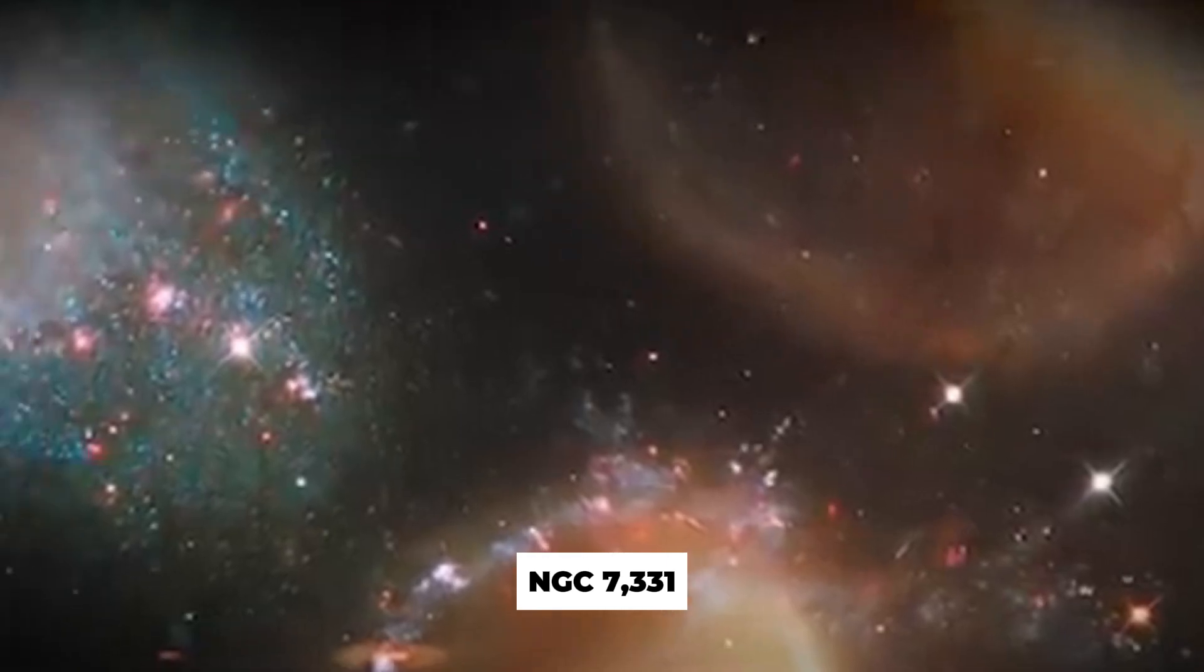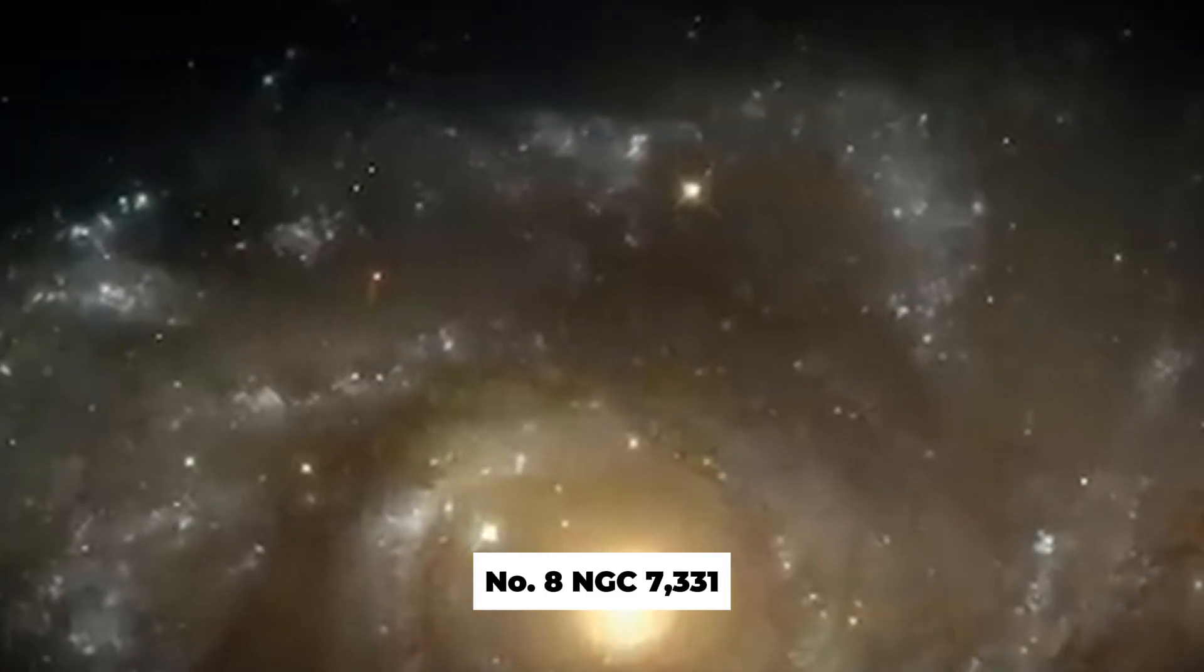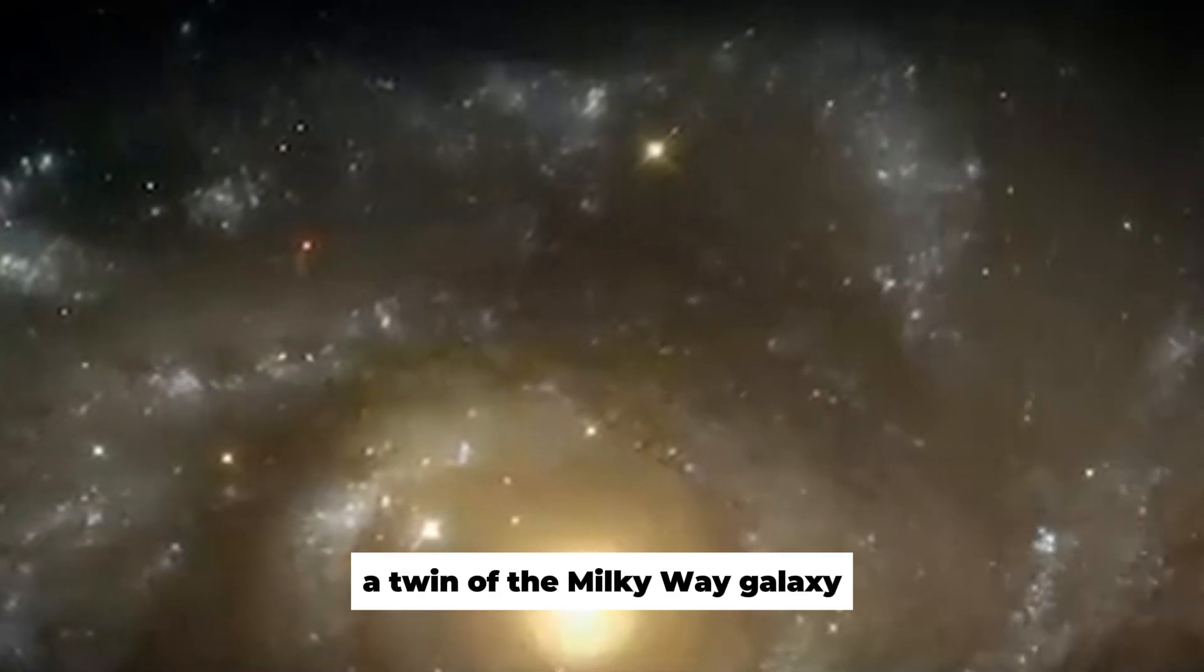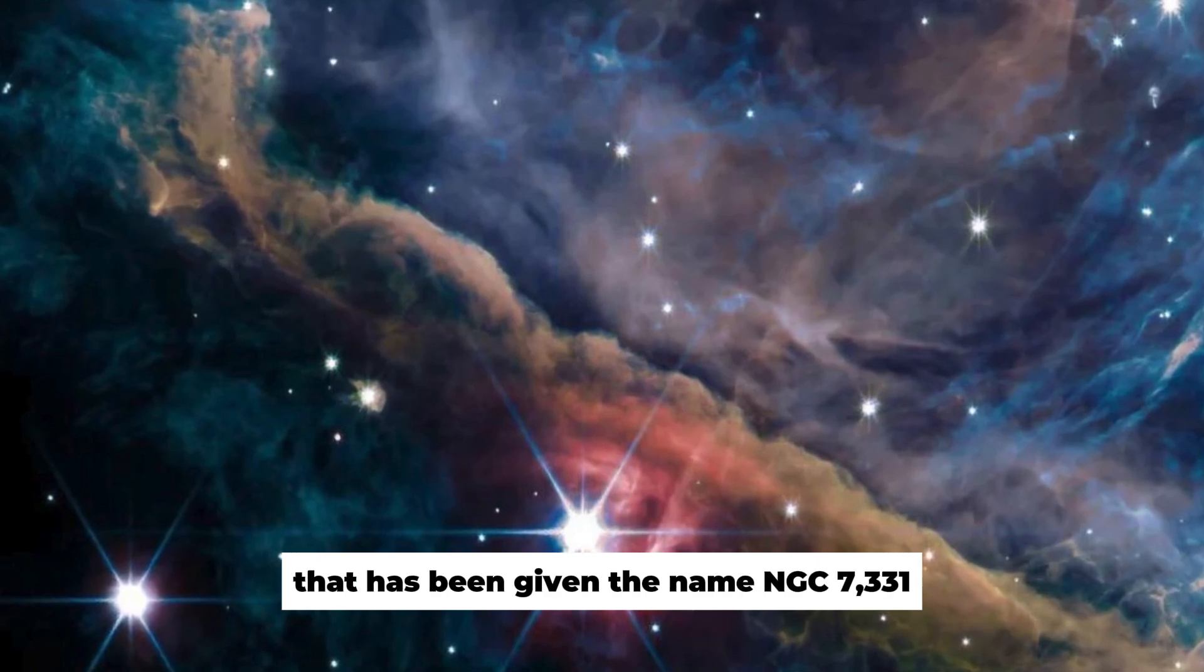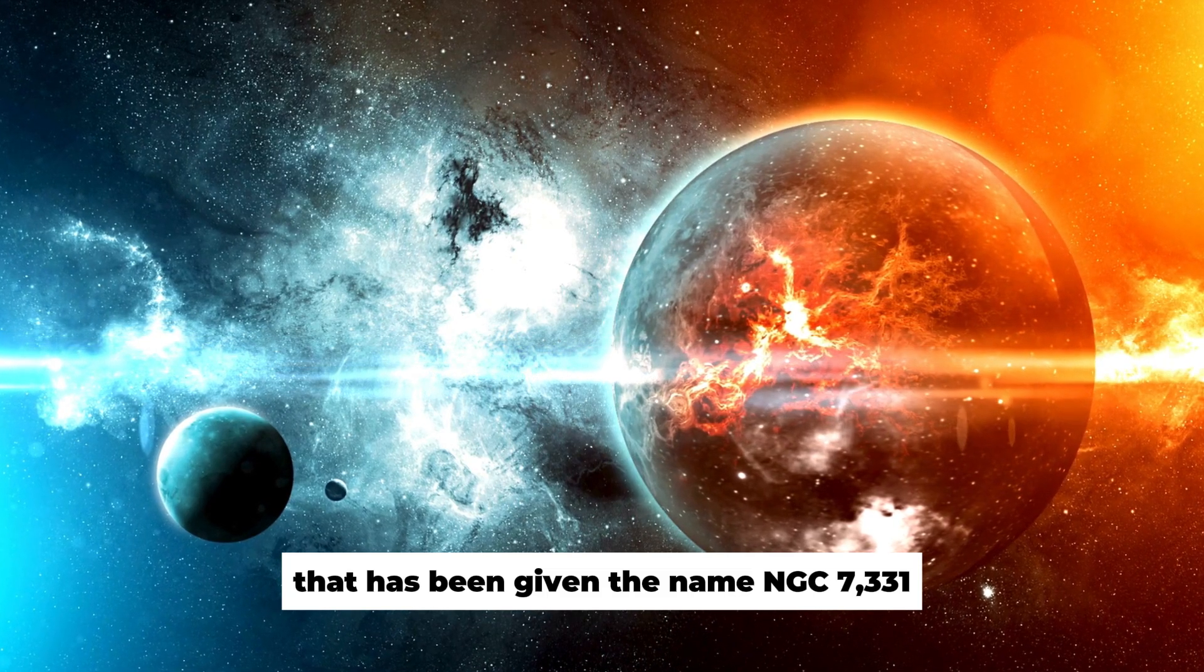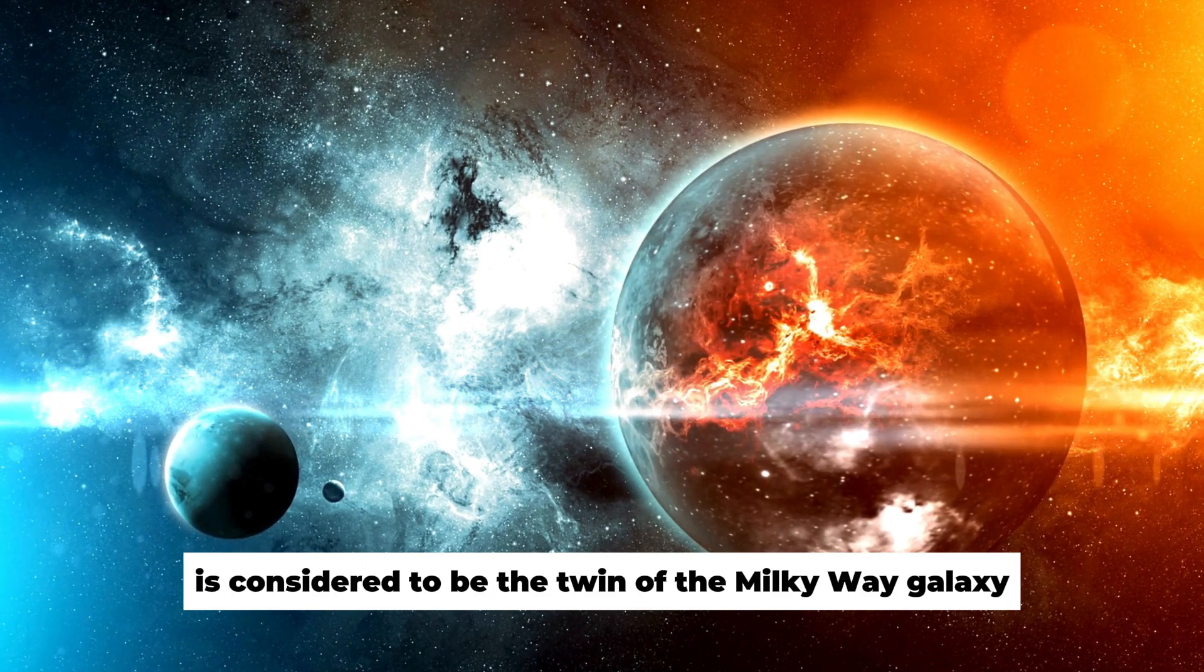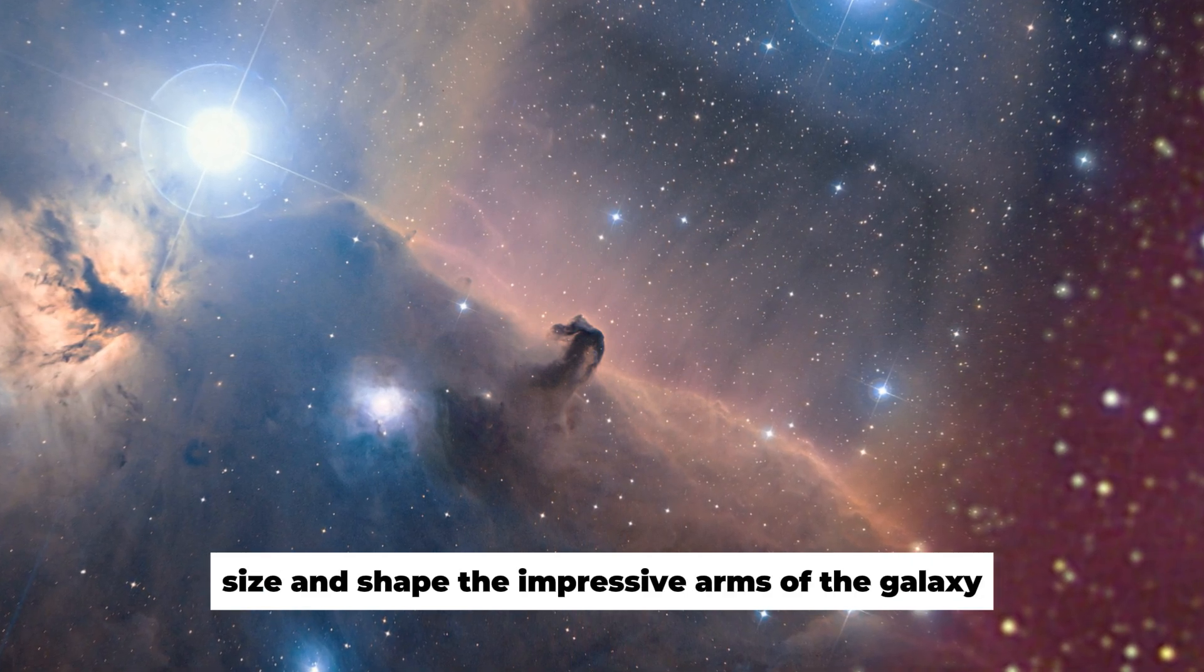Number 8: NGC 7331, A Twin of the Milky Way Galaxy. This picture is that of a spiral galaxy that has been given the name NGC 7331. This beautiful galaxy is considered to be the twin of the Milky Way galaxy because both possess identical mass, size, and shape.